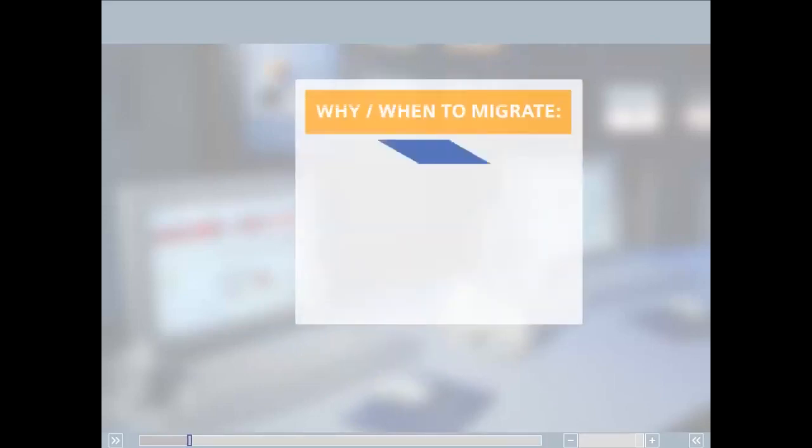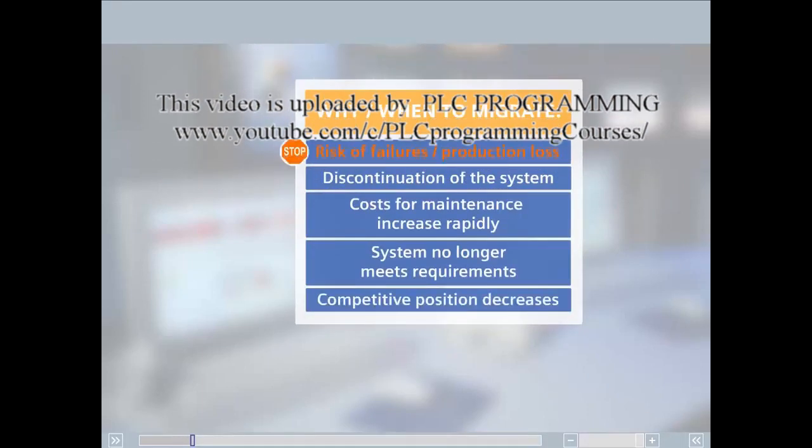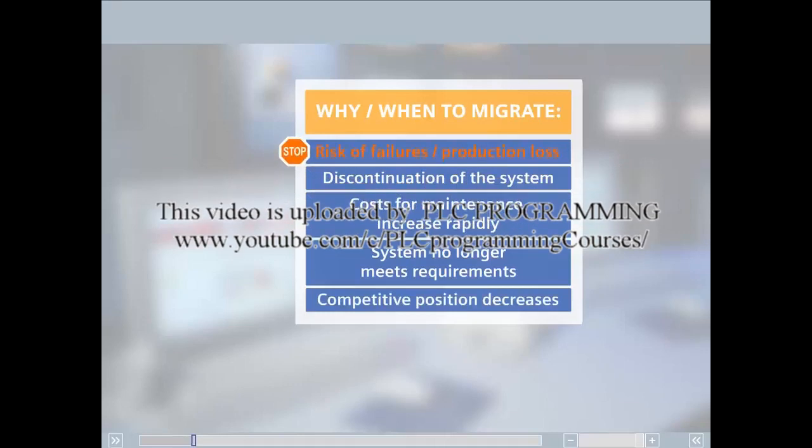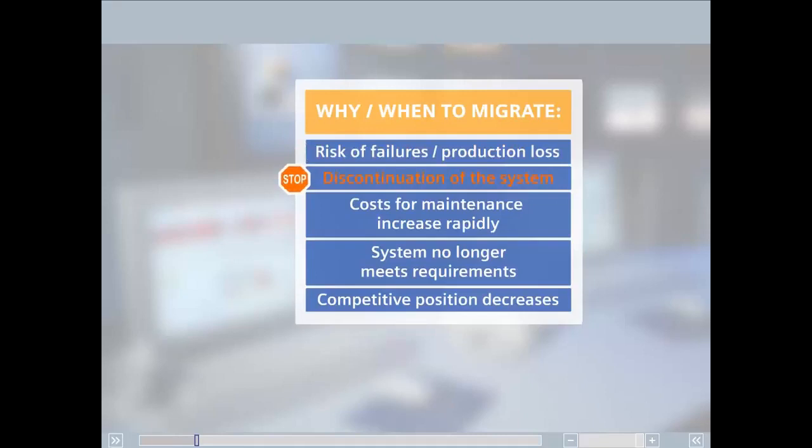There are numerous reasons why migration to modern, state-of-the-art systems becomes necessary. The risk of failures increases greatly in plants that have been in operation for decades. The vendor of the process control system being used decides to terminate further support for the system. The costs for upgrades, expansions, and for maintenance increase rapidly for old systems. The existing system no longer meets the current requirements. It is simply no longer possible to expand the system as would be necessary to remain competitive.